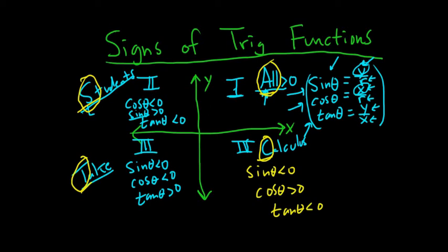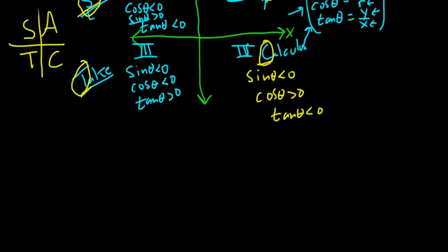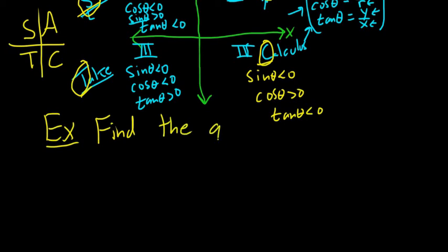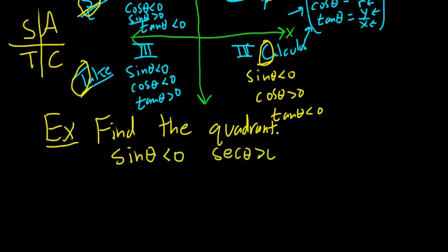All Students Take Calculus — pretty easy trick, and you can memorize it like that. Let's do a simple example. The question says: find the quadrant where sine of theta is less than 0 and secant of theta is greater than 0.